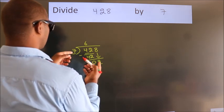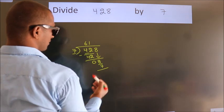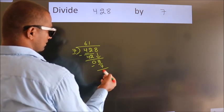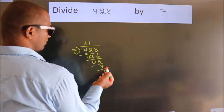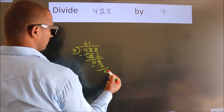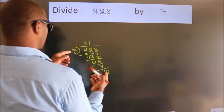Now we subtract and get 1. After this, no more numbers to bring down. So what we do is put a dot and take 0. So 10. A number close to 10 in the 7 table is 7 times 1.